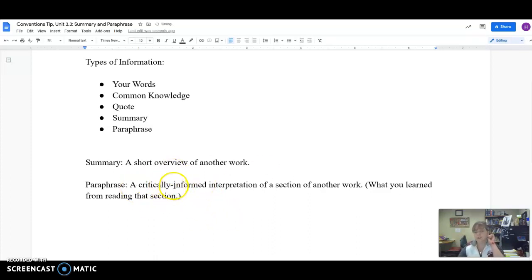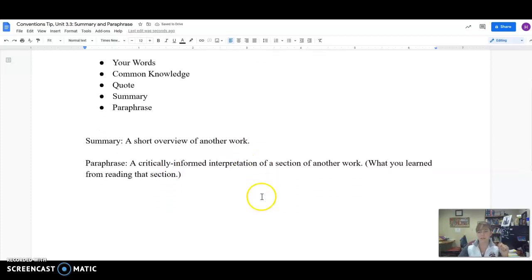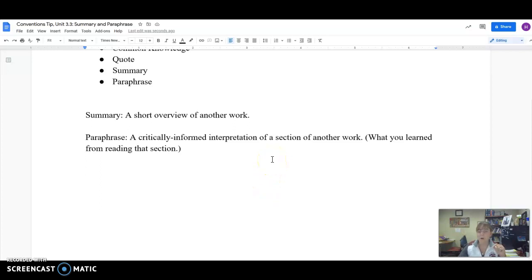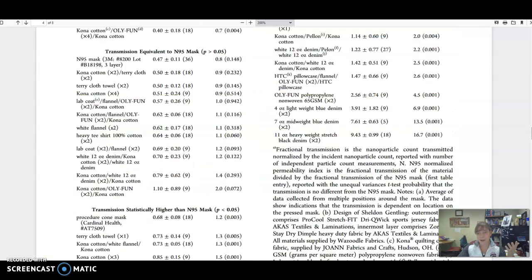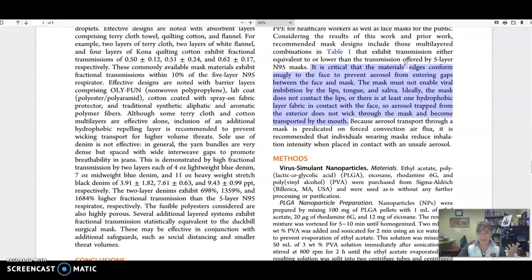So here I'm using the term critically informed interpretation. This means that you have carefully read not only the sentences that you're interested in, but also the information that surrounds them and used that information in order to explain to your reader what that writer meant. Let's look at an example. Clearly this is not something that our reader is going to be familiar with. This is a lot of fancy language and it gets even better. I'm going to come down here to this paragraph and I'm looking at this information right here. It is critical that the material's edges conform snugly to the face to prevent aerosol from entering gaps between the face and mask.